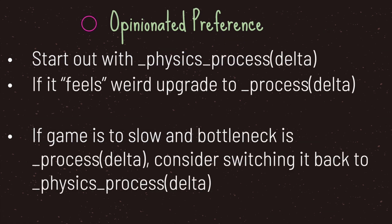One thing that is not opinion: anything dealing with physics needs to be inside the physics process virtual method. The reason is that delta is a constant inside physics process. For code logic outside the physics realm, the following is personal preference: if you are a beginner, the best thing is to put all your code logic inside the physics process virtual method.